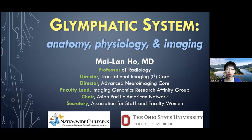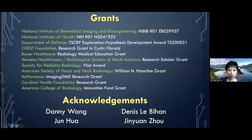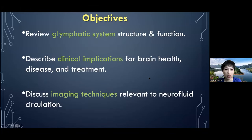Thank you, everyone. Today I'll be talking about the glymphatic system, which is a fairly newly described entity from just the last decade, responsible for brain homeostasis and a lot of disease processes as well. I'm going to provide a broad overview of the neuroanatomy, neurobiology, physiologic implications and variation, and then how we're interrogating this very interesting system with imaging over the next hour. We will be reviewing glymphatic system structure and function: what it is, what it does, the clinical implications for brain health and disease, and emerging and current imaging techniques relevant to neurofluid circulation and dynamics.